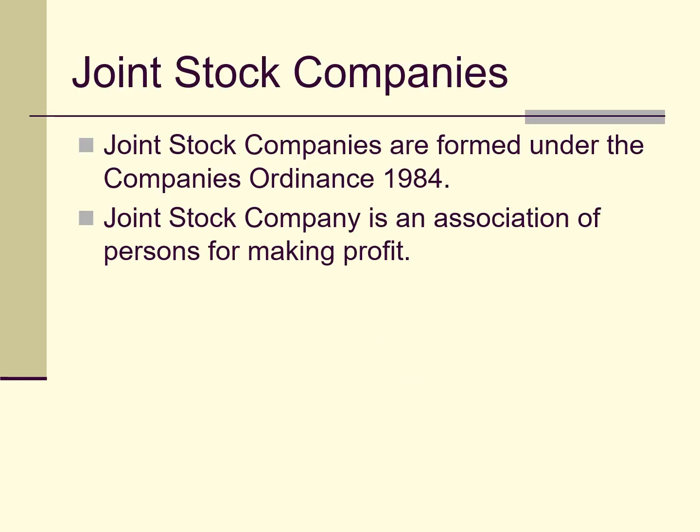A joint stock company is a company in which there are lots of investors. The main significant factor of a joint stock company is that the owners are not actually running the business — the management and the owners are different. The owners contribute their capital and get shares in exchange for the money they put into the business. In meetings, they can select the management, which is responsible for running all the affairs of the business.